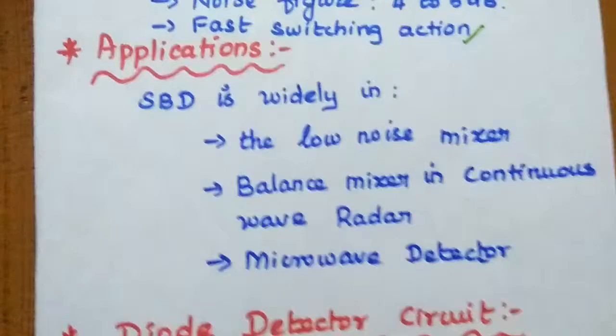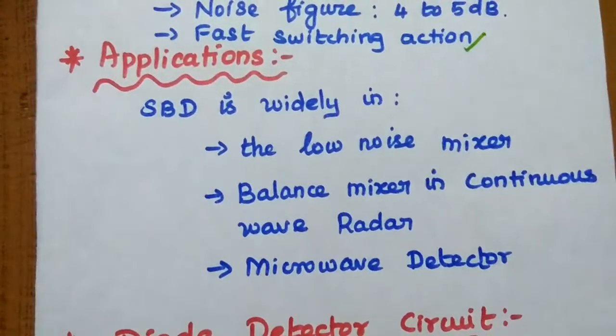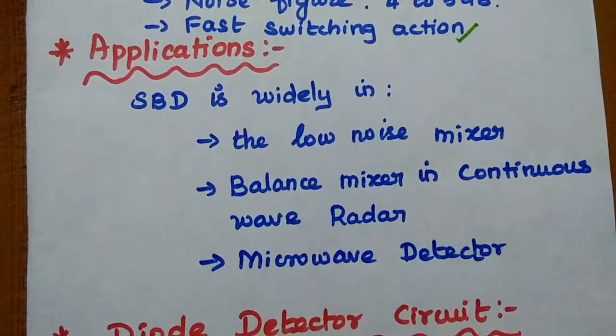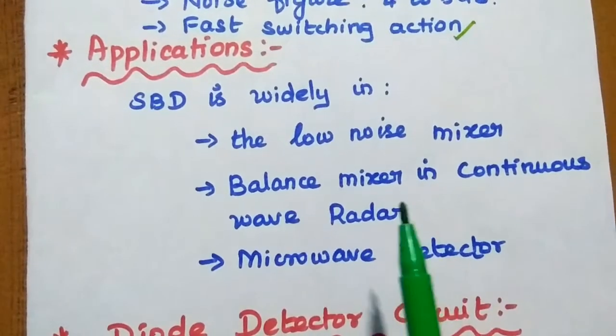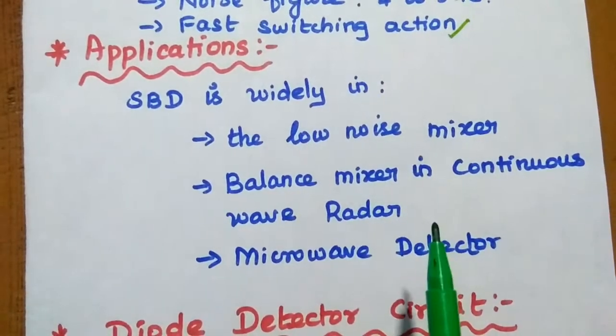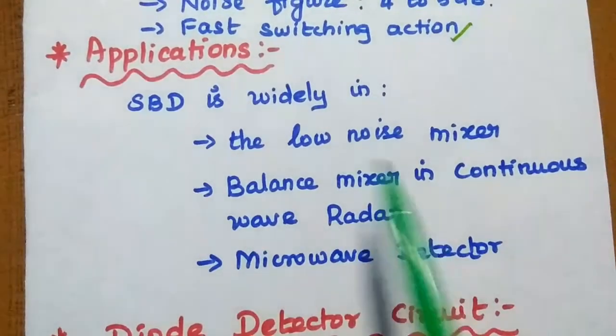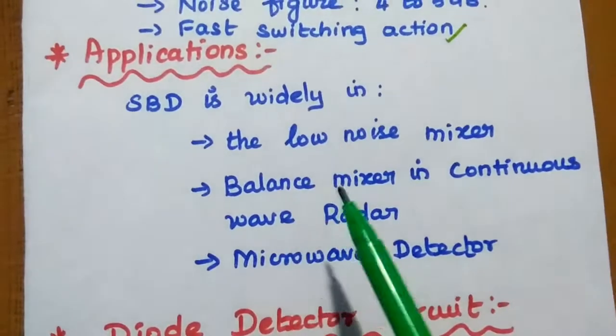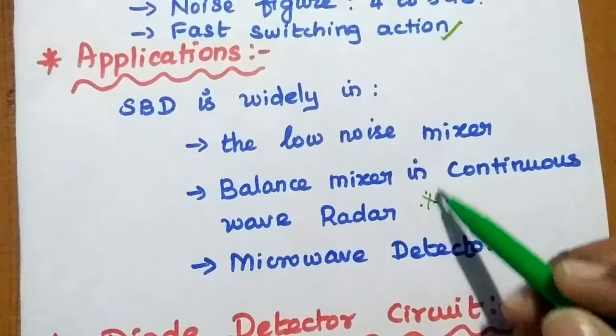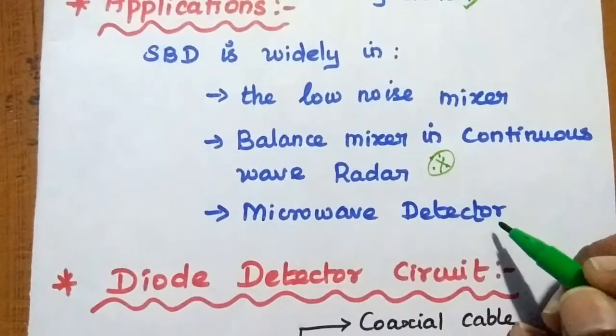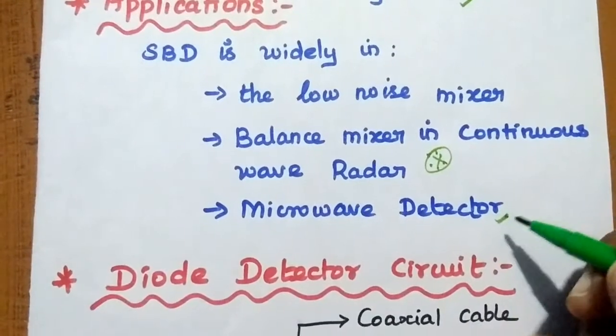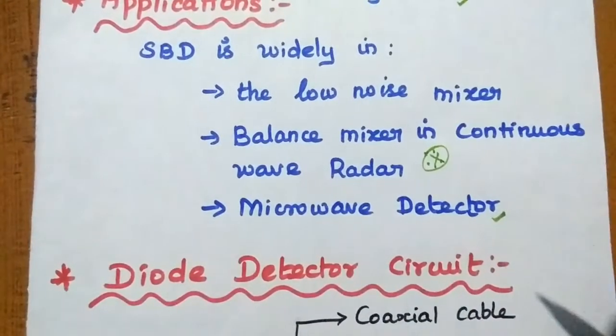Then the applications of Schottky barrier diode. It is widely used in low noise mixer, balance mixer in continuous wave radar. So it is widely used in a radar system. It is a very important application of the Schottky barrier diode, and also in microwave detector to detect the microwave signal.